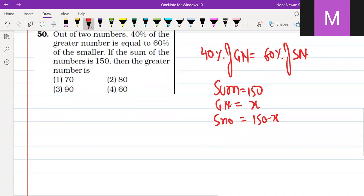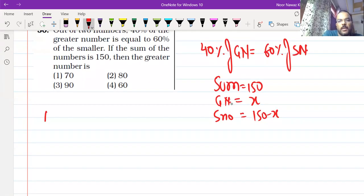So let's put the value. What do you have to do? 40% of the greater number is x, 60% of the smaller number is 150 minus x.